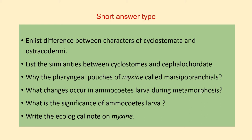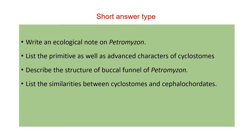Why are the pharyngeal pouches of Myxine called marsipobranchials? What changes occur in Ammocoetes larva during metamorphosis? You have to explain in one paragraph the changes which occur during the metamorphosis of the Ammocoetes larva. What is the significance of Ammocoetes larva? Write an ecological note on Myxine. Write an ecological note on Petromyzon — this is a very important question.